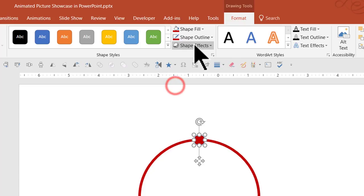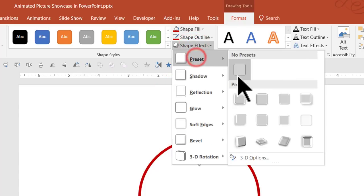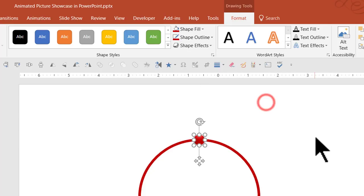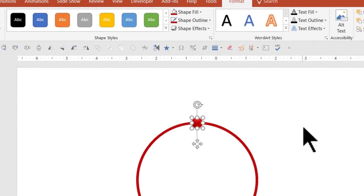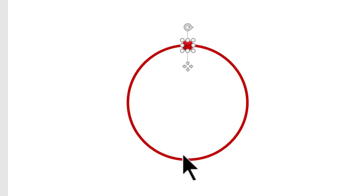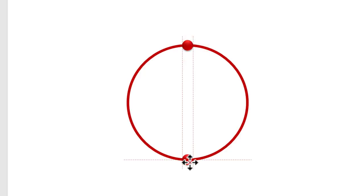Then we are going to give this dot the same red color as the outline. Go to Shape Effects, go to Preset, and apply Preset 2. Then I'm going to make a copy using Ctrl+D and place it exactly in line with the earlier one — the smart guide helps place it precisely.